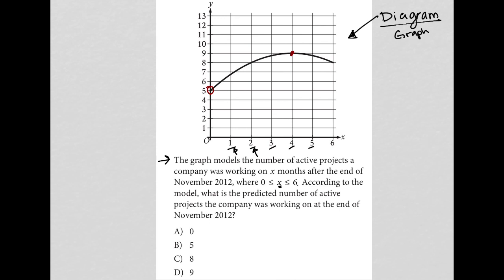Where x, the number of months, is between 0 and 6. So we just have 6 months total. According to the model, what is the predicted number of active projects? All right, so that's our y-value.